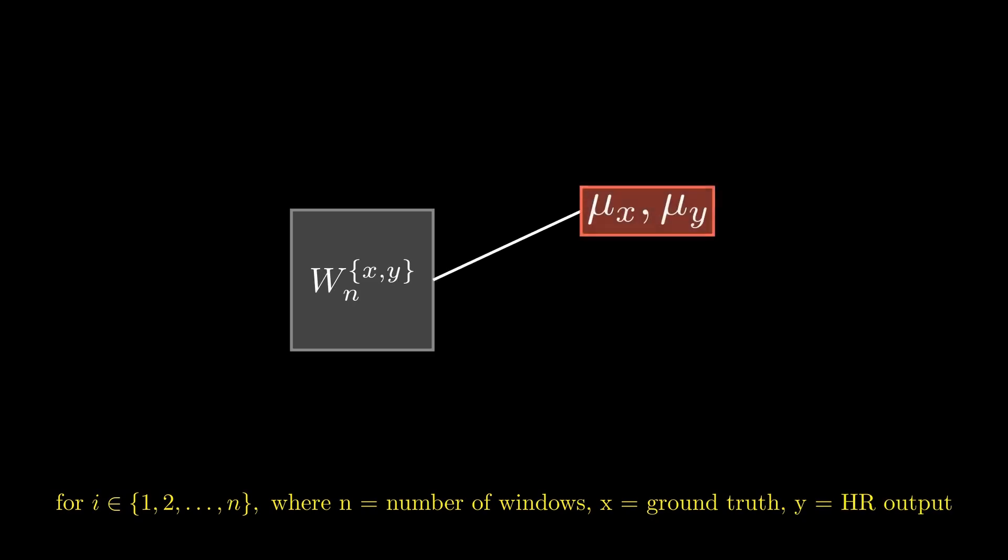For each patch, SSIM focuses on three main components in its comparison. Luminance, contrast, and structure. Luminance is defined as the average pixel intensity over the given window. Contrast, on the other hand, is defined as the standard deviation of pixel intensities over the given window.